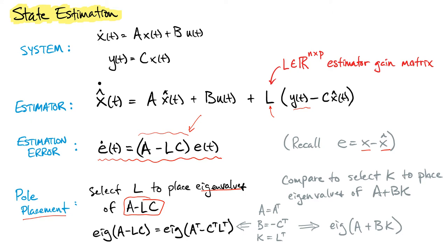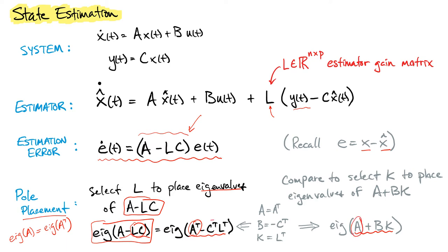One of the most fundamental identities in terms of transposes and eigenvalues is that the eigenvalues of A and the eigenvalues of A transpose are in fact the same. So we can take the transpose of A minus LC to get A transpose minus C transpose L transpose — remember that taking the transpose of a product swaps the order. This is equivalent to the state feedback case where A transpose plays the role of A, C transpose plays the role of B, and L transpose plays the role of K. This makes a direct connection between state estimation and state feedback.